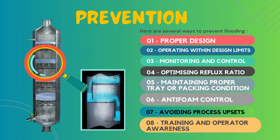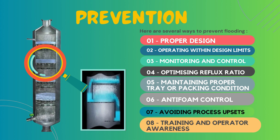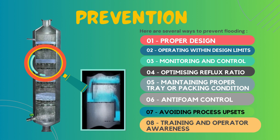The second measure to prevent flooding in a distillation column is operating within design limits. It is very necessary to operate the distillation column within the specified design limits, including vapor and liquid flow rates, reflux ratios, and temperature and pressure conditions. We should avoid operating the column beyond its capacity, as this can increase the risk of flooding.